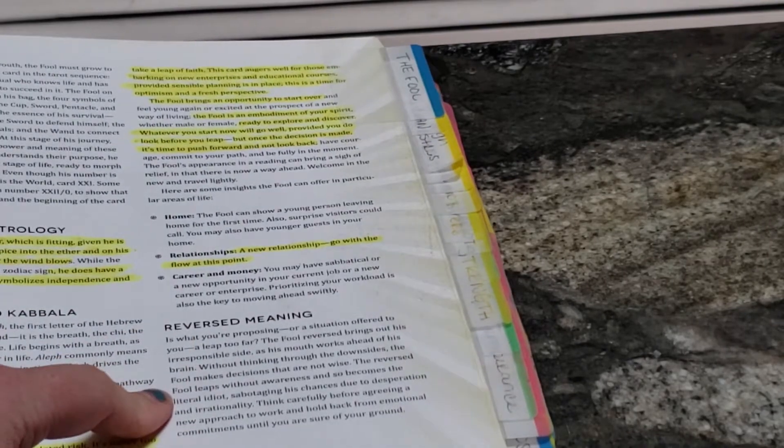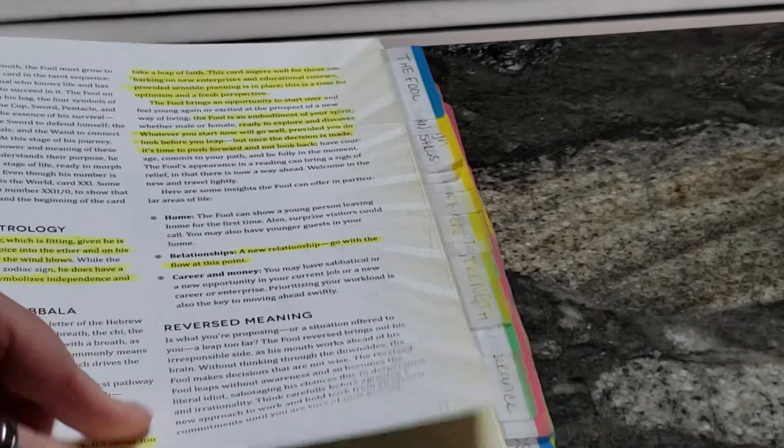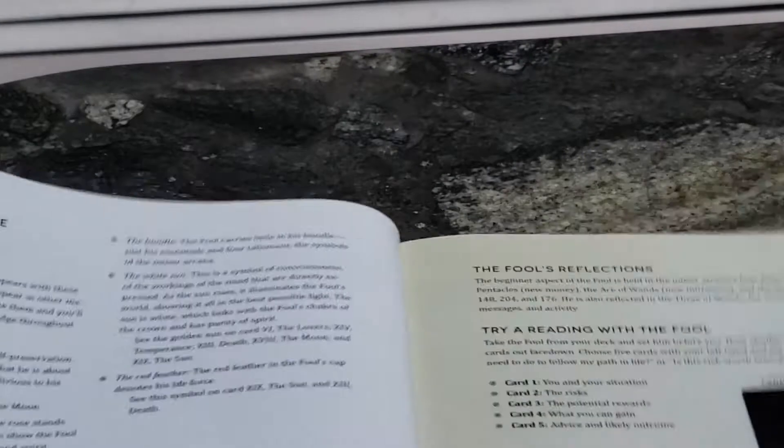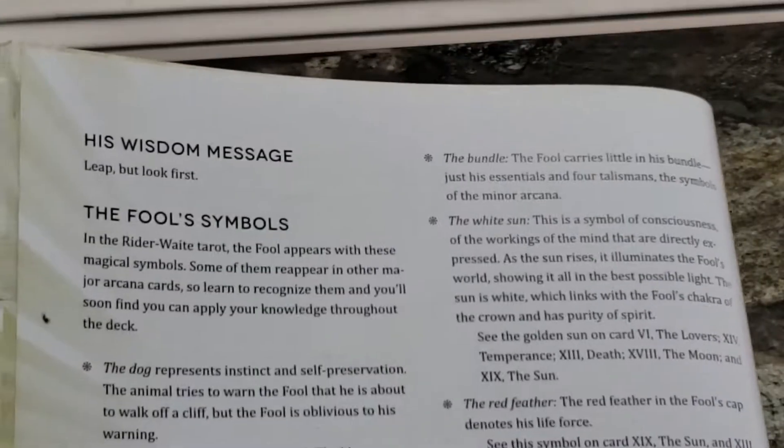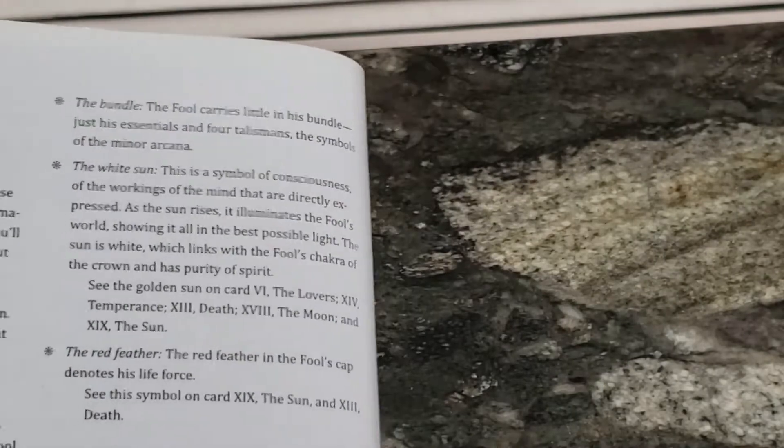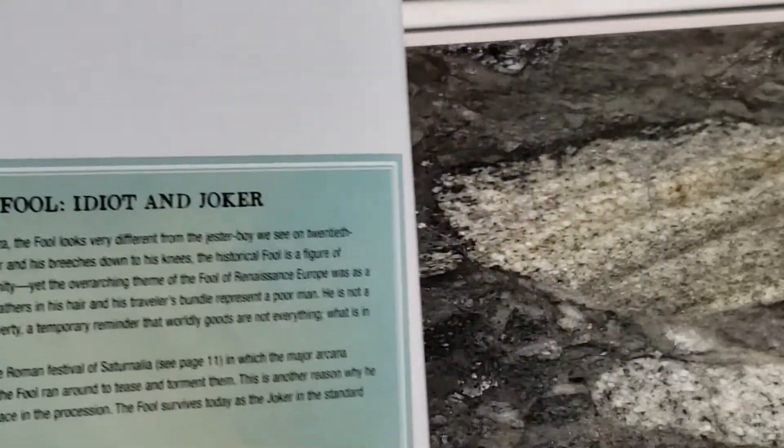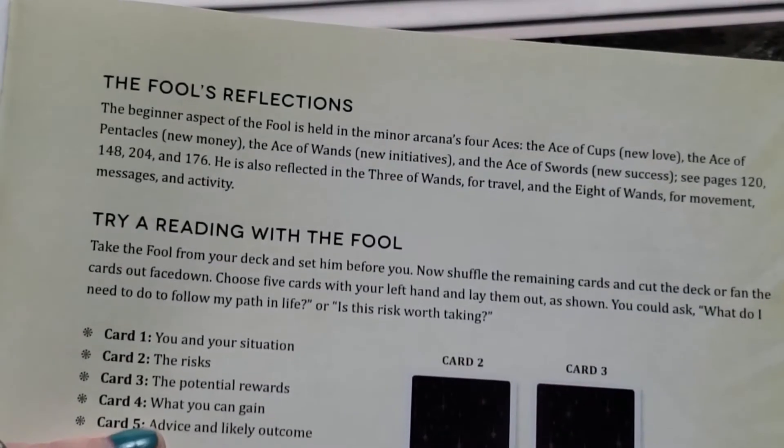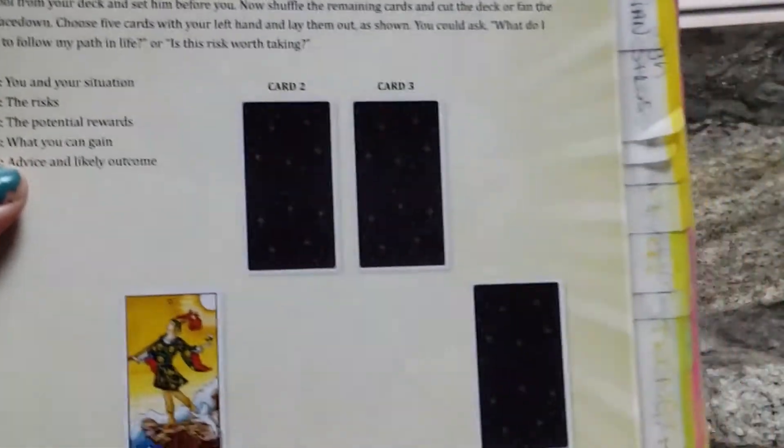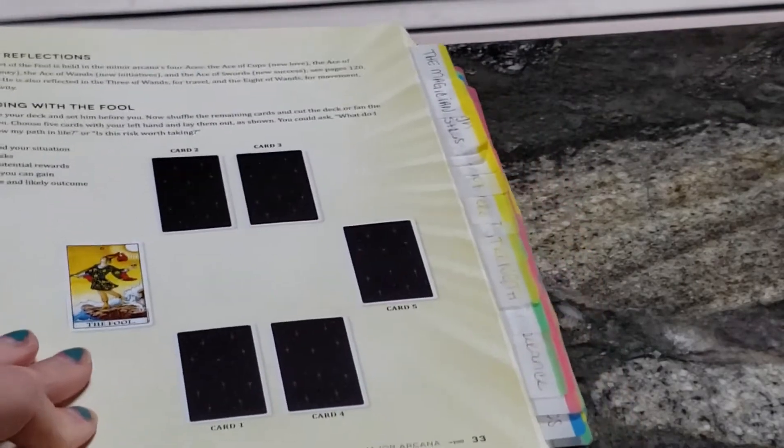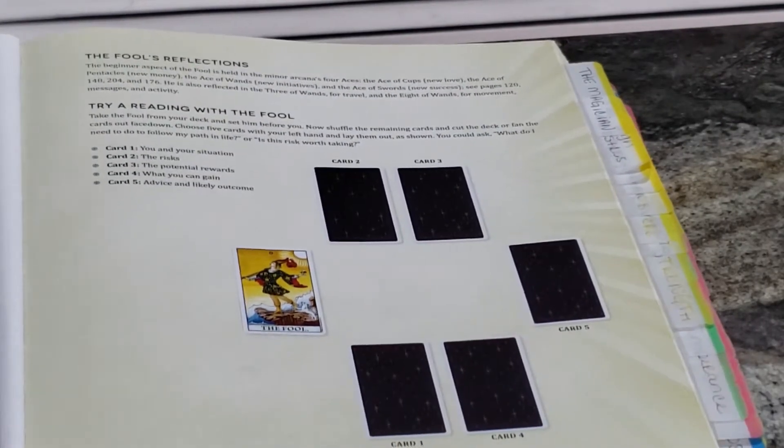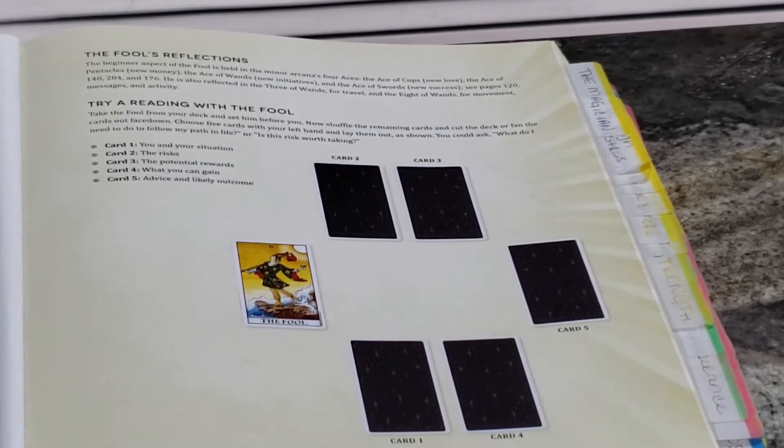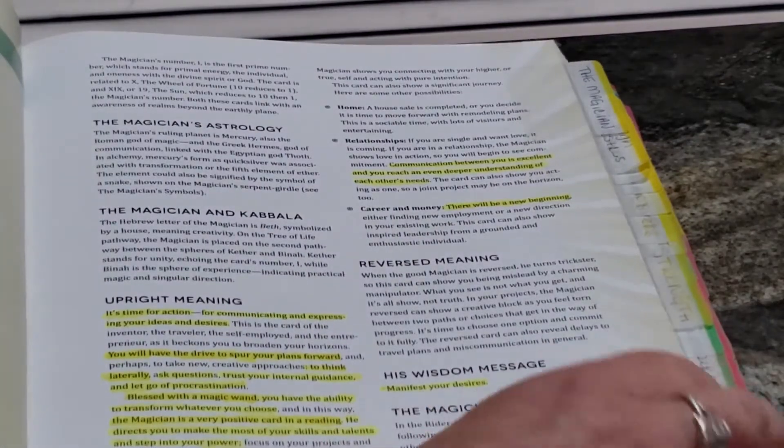And I have a whole book about reversals. I will pull that out in another video. We will talk about that. And then, so every Major Arcana has four pages. So this is the next page. It talks about his wisdom message, the fool, all the symbolism. This is all symbolism for the fool. Okay. And then it talks about the history. All right. This green box is the history. And then the other side, it does like some journaling and reflection, trying readings with it. And they give you a spread to do with it.